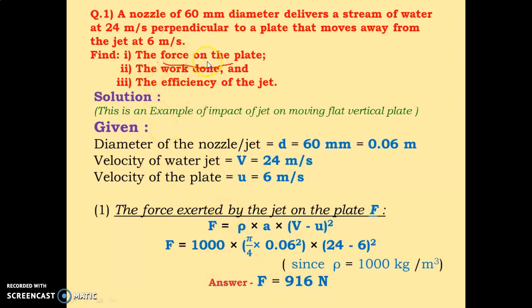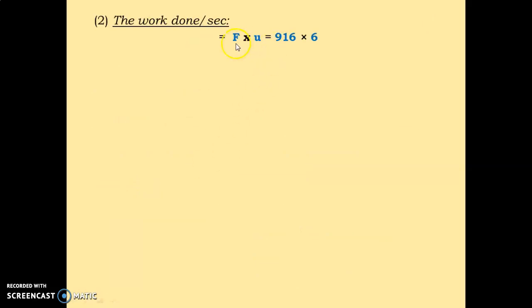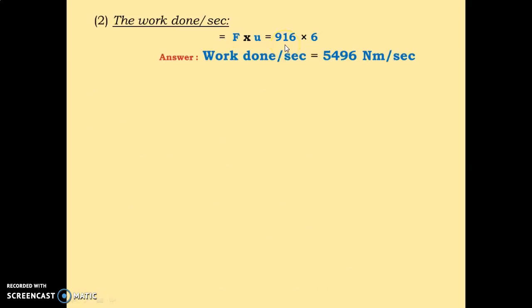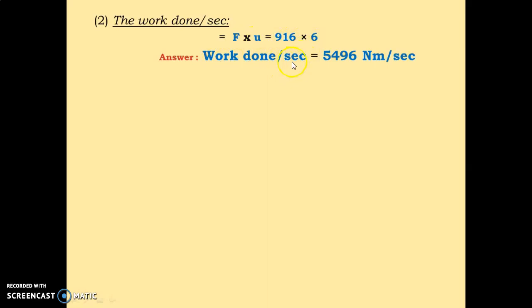Now we will find the work done per second. Work done per second equals the force applied by the jet on the plate multiplied by the velocity of the plate. So work done = F × u = 916 × 6 = 5496 Newton meter per second.